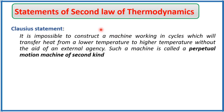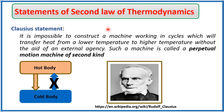Now we will discuss the various statements of the second law of thermodynamics. The first is the Clausius statement: it is impossible to construct a machine working in cycles which will transfer heat from a lower temperature to a higher temperature without the aid of an external agency. That means heat cannot be transferred from a lower temperature body to a higher temperature body on its own — a machine that would do so is called a perpetual motion machine of the second kind. Heat can be moved from a hot body to a cold body, but not from a cold body to a hot body.